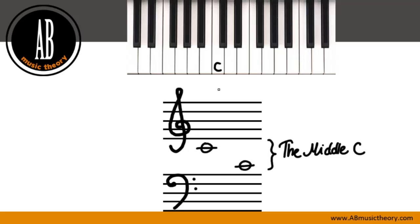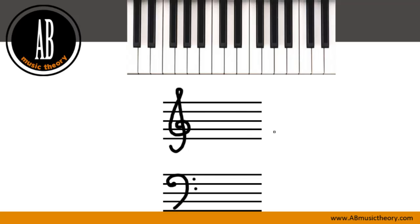When you draw your middle C in the treble clef, don't draw your ledger line too far or too close to the first line of the staff. This is too close, and this is too far. This is just right.